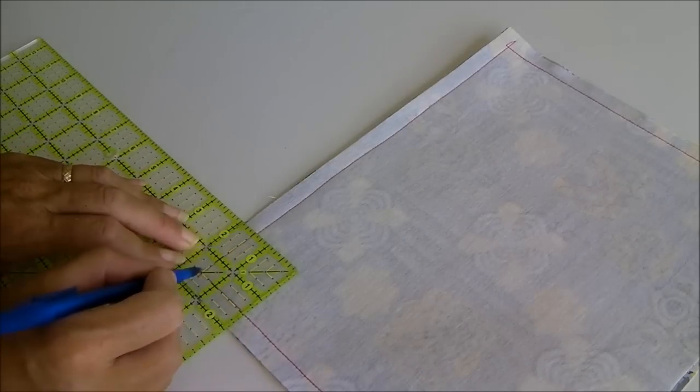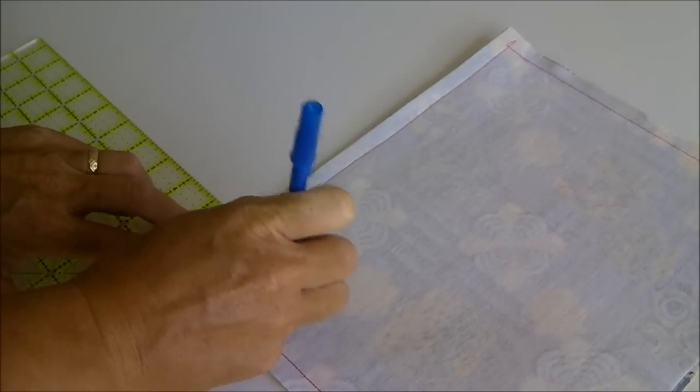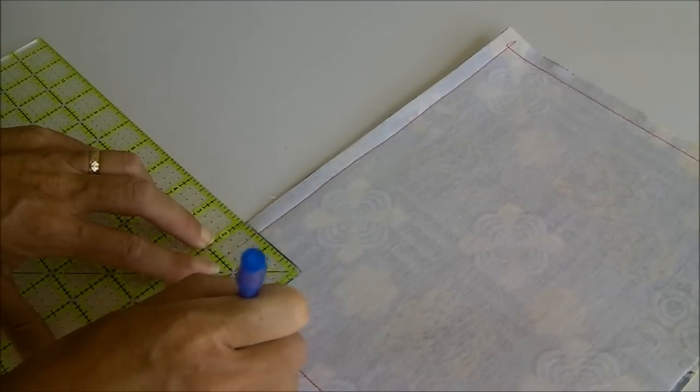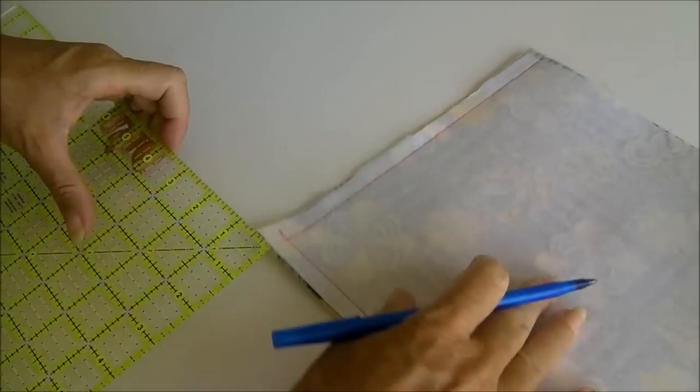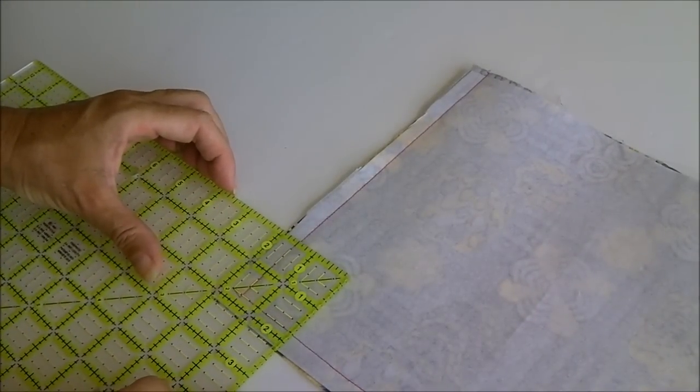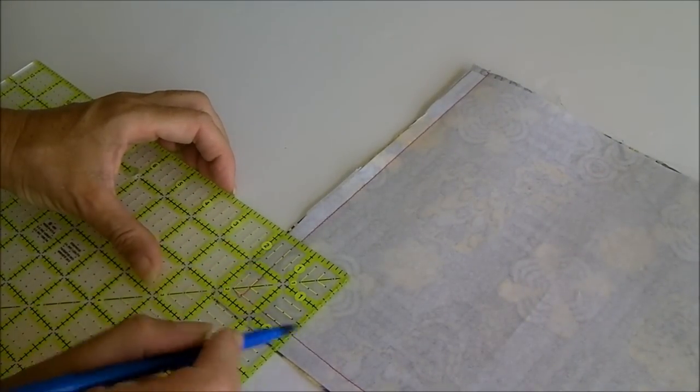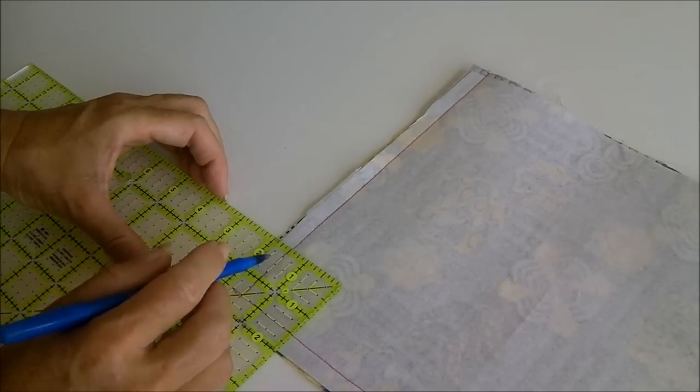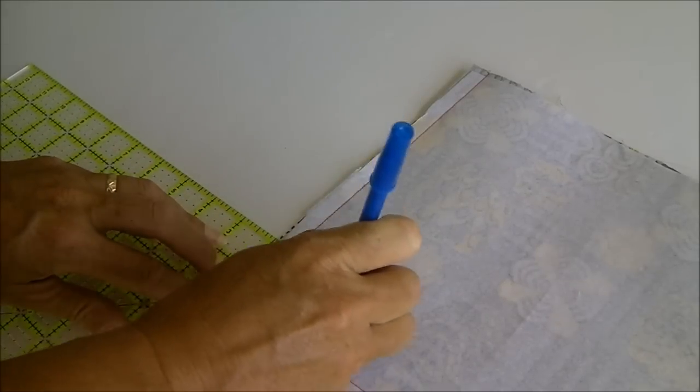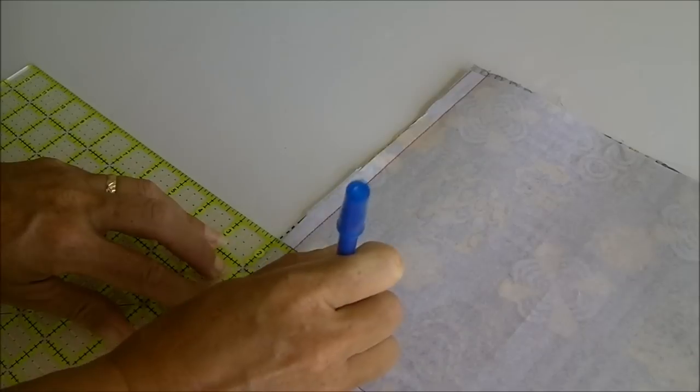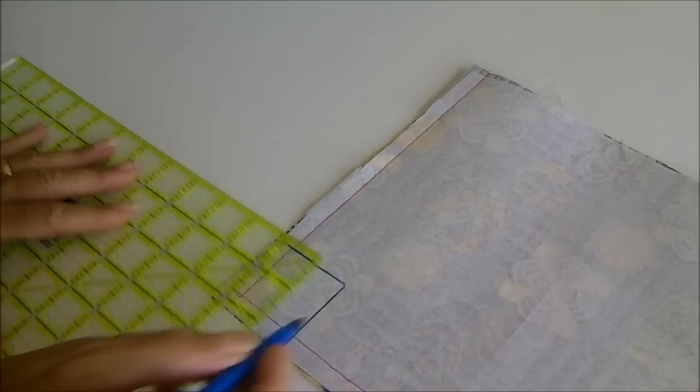Now I've got my one and a half inch lines marked up I can just draw around with a pen. Same on this other corner. I'll line up my one and a half inch lines with my seams I've already got and now I can cut out these squares.